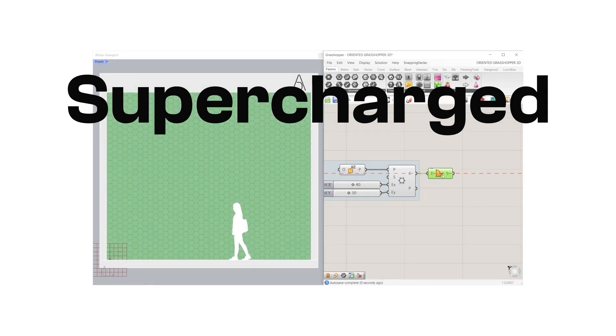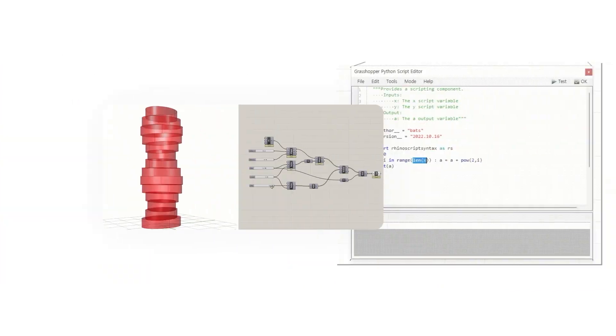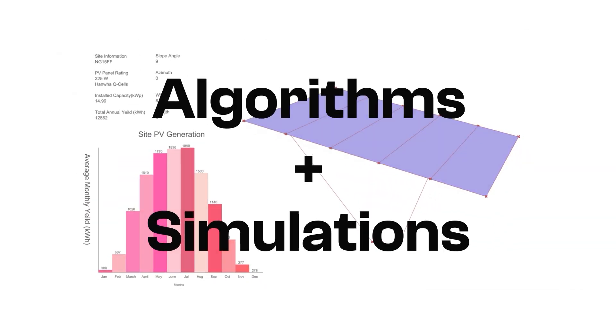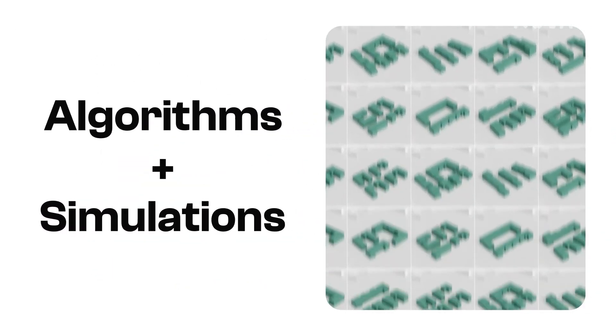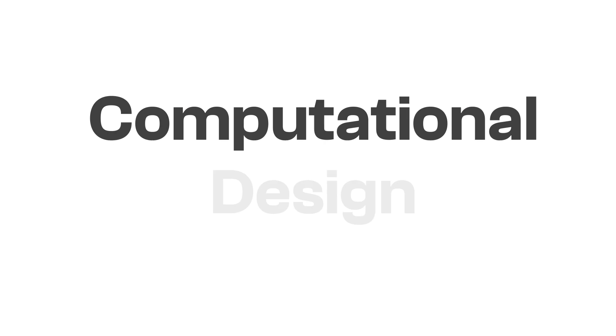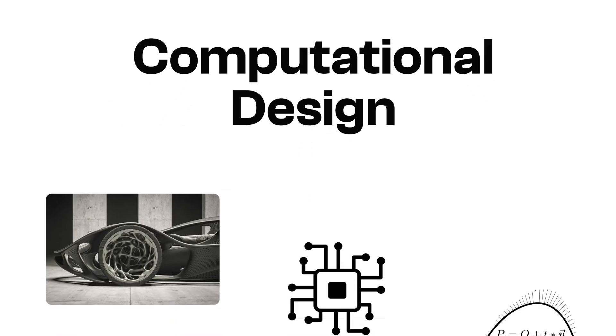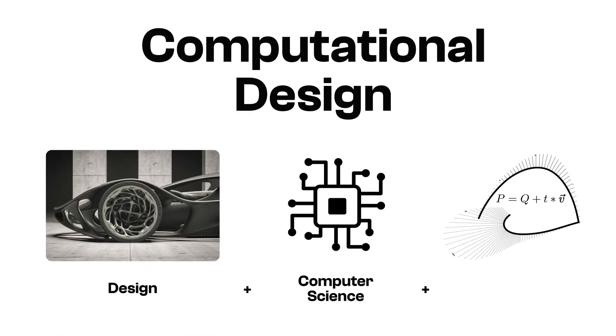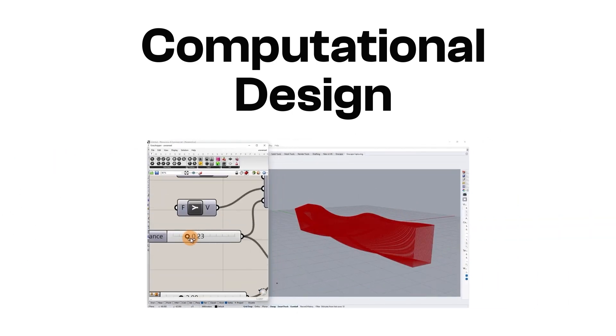It's like having a supercharged design assistant powered by computer programming. It's about using algorithms and simulations to explore tons of design options and find the best solutions. Does it sound fancy — or rather, should I say wizardry to make designs? Basically, computational design combines design with computer science and maths to create and analyze complex structures and systems. But let me tell you, it's more than just creating multiple designs.